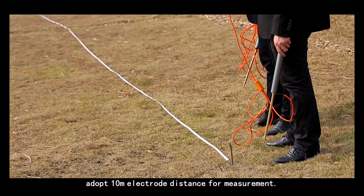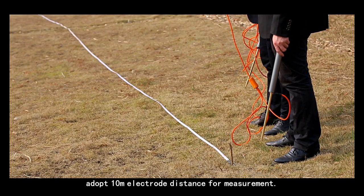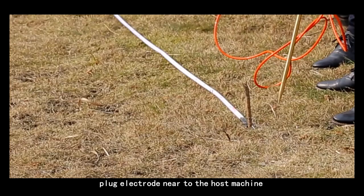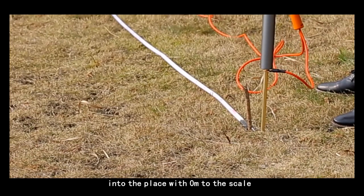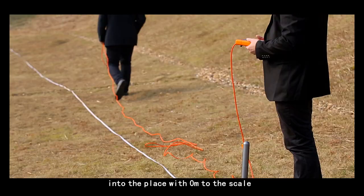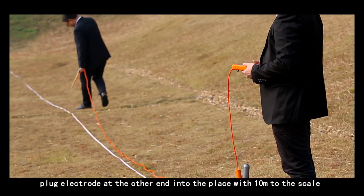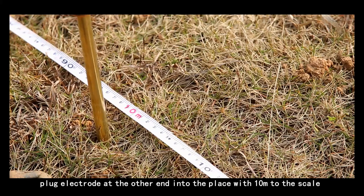In the following, adopt 10 meters electrode distance for measurement. Plug electrode near to the host machine into the place with 0 meters to the scale. Plug electrode at the other end into the place with 10 meters to the scale.